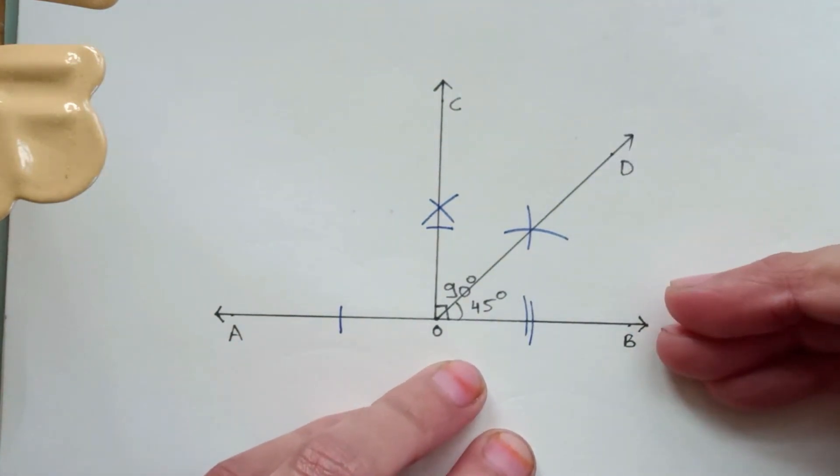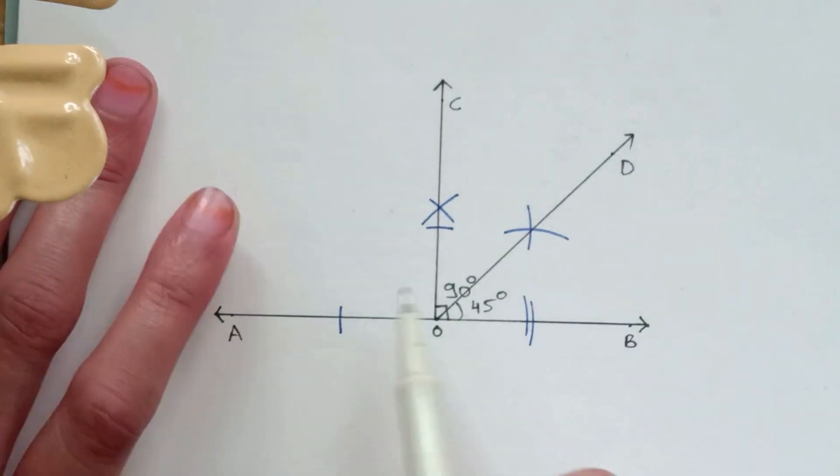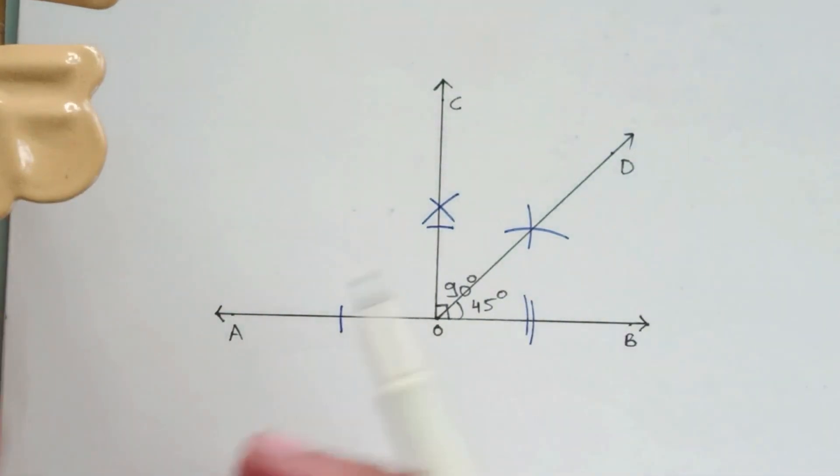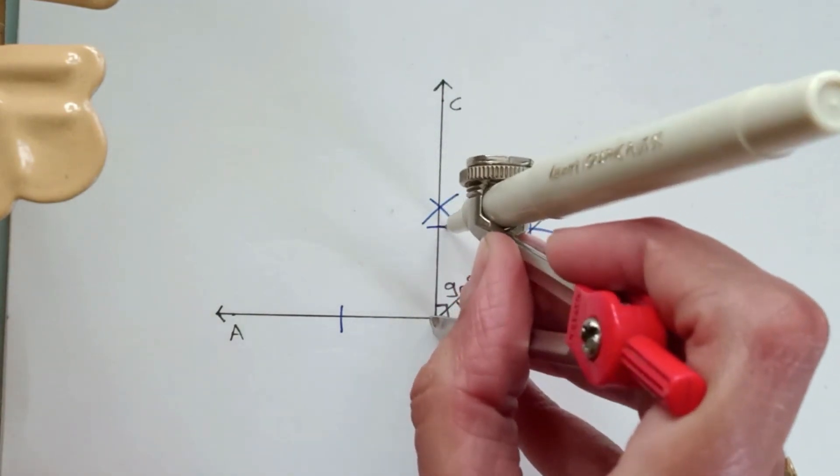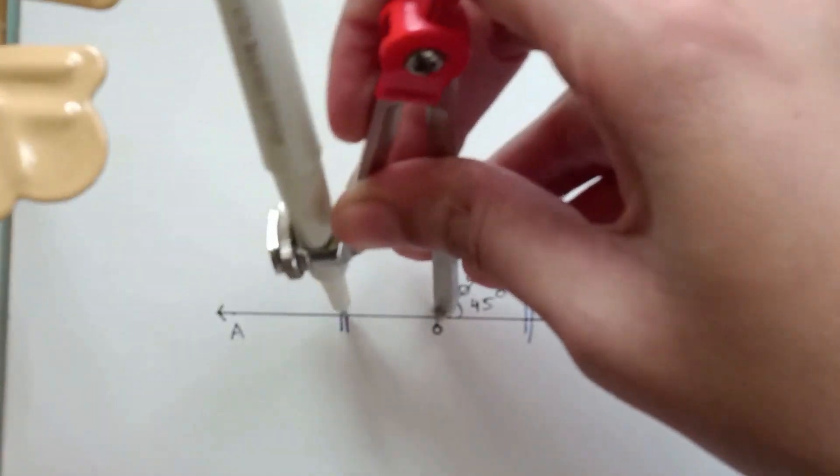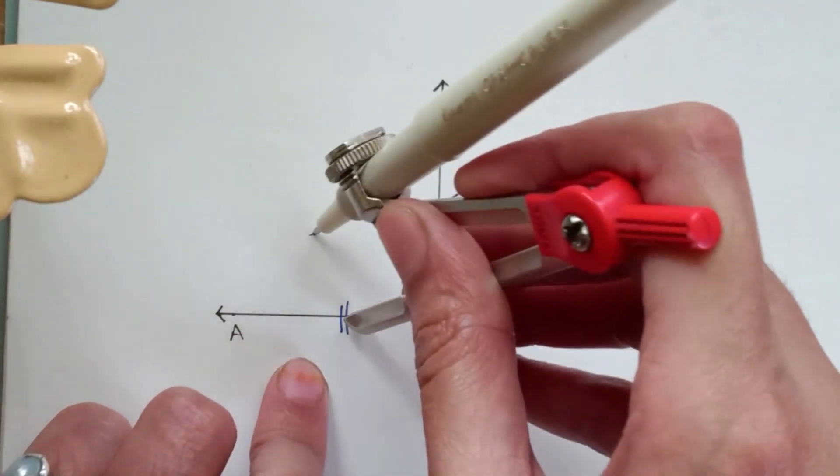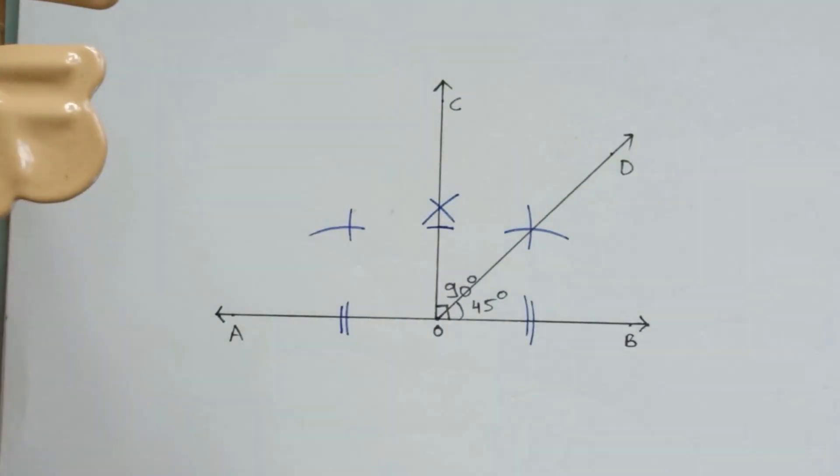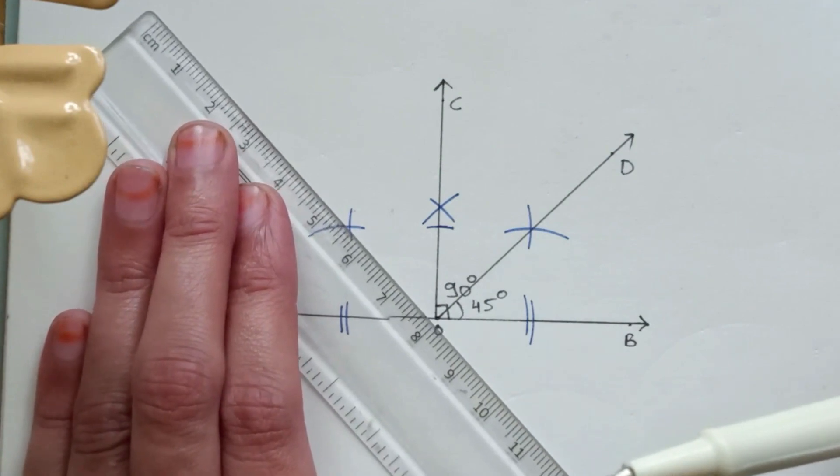So this is how we can draw a 45 degree angle. Similarly, on the left hand side, if you want to draw a 135 degree angle, I'll just show you how to draw 135 degree angle. Follow the same procedure. We have marked one arc on this horizontal line. I'm marking a second arc on line OB. We keep the pointer on these two arcs and draw two intersecting arcs here, and then join this point with O.